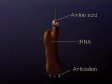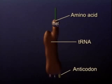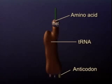Transfer RNA carries an amino acid, which will be incorporated into the polypeptide. Its anticodon is a triplet complementary to the codon on messenger RNA that specifies that particular amino acid.